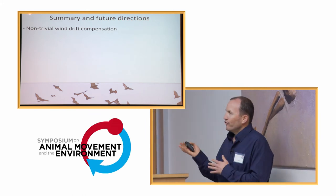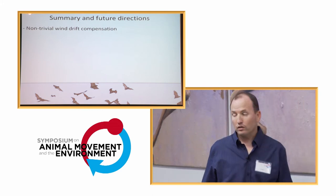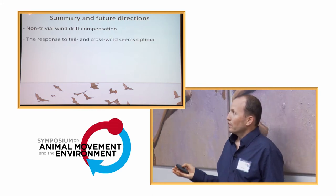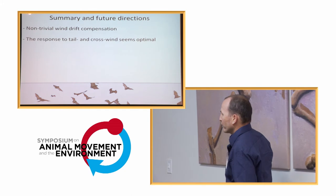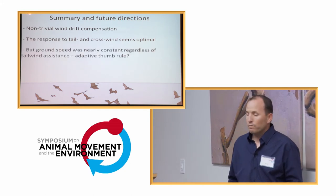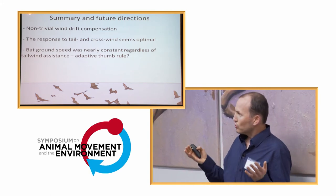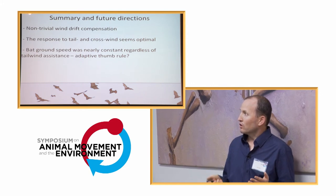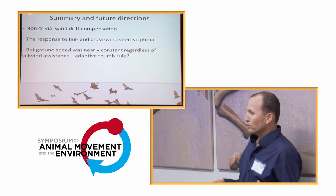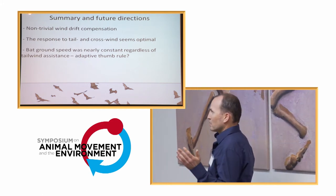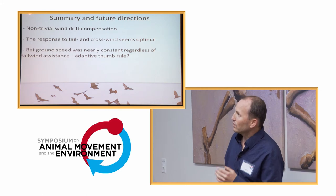So, we find some non-trivial wind drift compensation that still needs to be explained and explored. The response to tail and crosswind seems optimal or at least seems to conform with theoretical expectations. We did find something which may indicate the rule that bats actually use. So, bat ground speed was nearly constant regardless of tailwind assistance, which means that this might be an adaptive thumb rule. They use possibly this kind of rule to make near optimal decisions with regard to the flow.